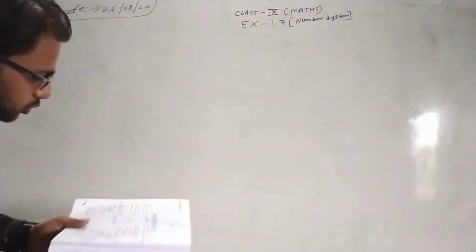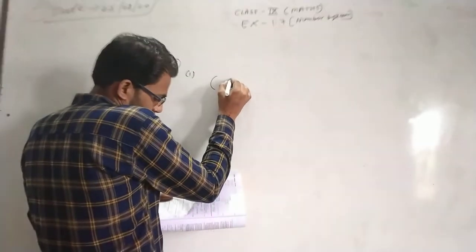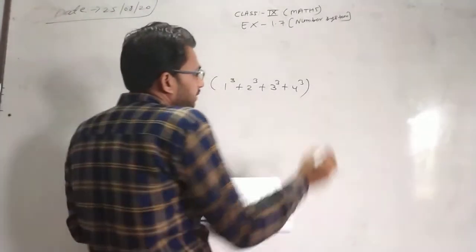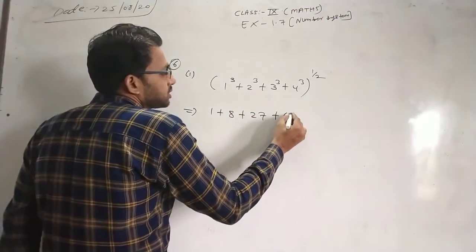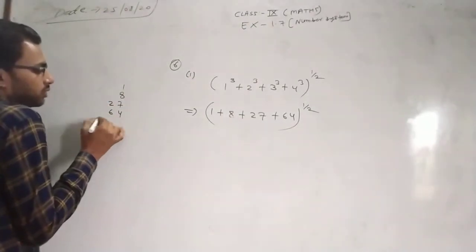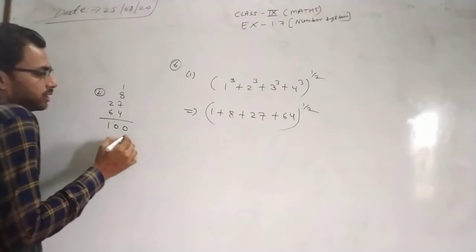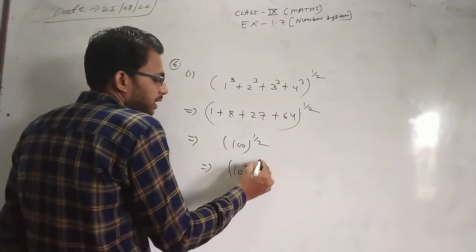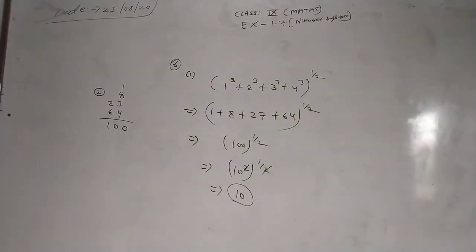Now you will also do it, right? If I do everything, then what will you do? The next expression: 1 cubed plus 2 cubed plus 3 cubed plus 4 cubed, all to power 1 by 2. Adding them up: 1 plus 8 plus 27 plus 64 equals 100. So we have 100 to power 1 by 2, which equals 10 squared to power 1 by 2, giving us 10.